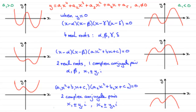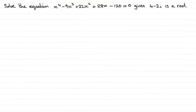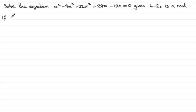We can use this idea in the following question. Suppose we had to solve the equation x to the power of 4 minus 9x cubed plus 22x squared plus 28x minus 120 equals zero, given that 4 minus 2i is a root. Well, suppose the roots of this equation are alpha, beta, gamma, and delta.